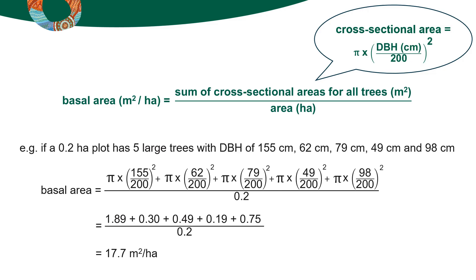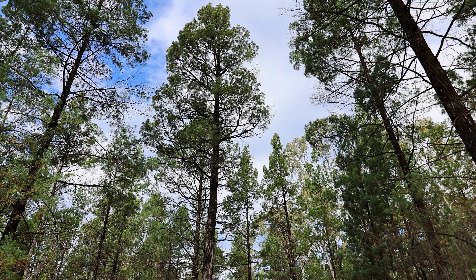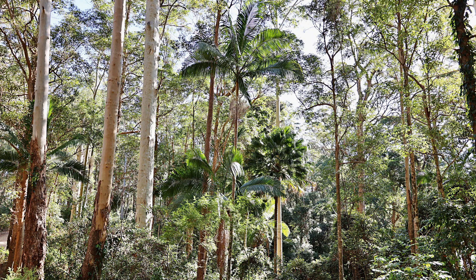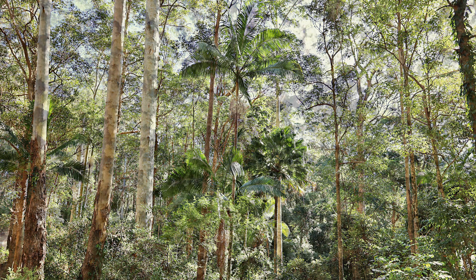In Queensland the maximum basal area for a cypress forest is around 25 square metres per hectare and for a wet forest it's around 50 square metres per hectare. Above this basal area tree growth will stall and trees start to die.